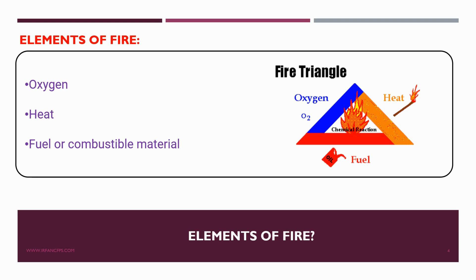The fire triangle, as you can see on your screen, has three basic elements: oxygen, fuel, and heat. This model represents the three essential elements needed to start the fire. Oxygen is air or another oxidizing agent that supports combustion. Heat is a source of ignition like a spark or flame. Fuel is a material that burns, such as wood or gasoline.